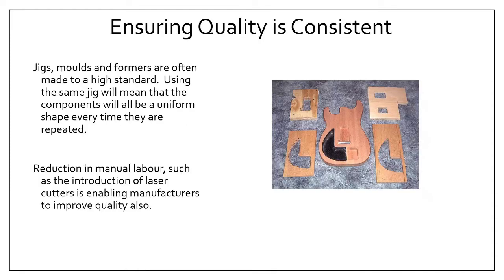What it all comes down to is how do we ensure the best and most consistent quality of a product. There'll be things that you use like jigs, moulds, and formers when you make things. When you make your major projects you may want to use a jig or a mould if you're making repeat things over and over again, allowing you to ensure you're using the same shape consistently. You can now make moulds a lot easier with things like 3D printers and laser cutters.